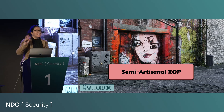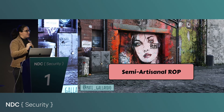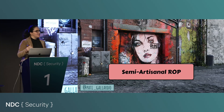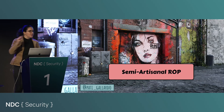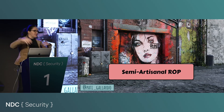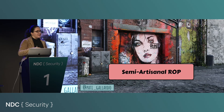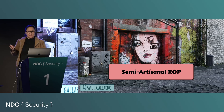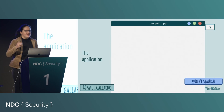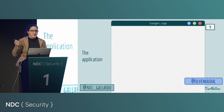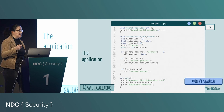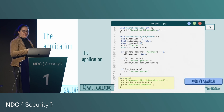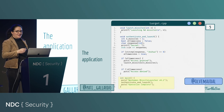What we're going to do today is what I affectionately call semi-artisanal ROP, which means we're going to use some tools to generate some stuff and then stitch it together ourselves, basically to give you a feel for the workflow. Our vulnerable application is a tiny application that overmodel wrote the original version of — it has only three functions.